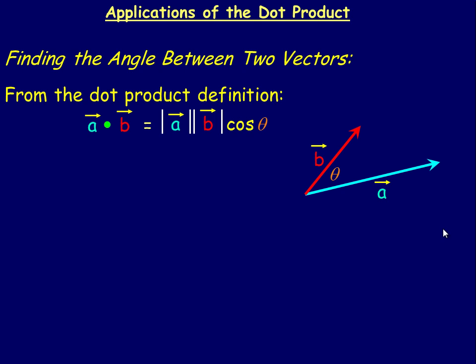In this lesson we'll take a look at applications of the dot product. The first one is to use the dot product to find the angle between two vectors. Specifically, the two vectors are drawn tail to tail — that's the angle between them, not as though they were drawn head to tail like when you're adding them.